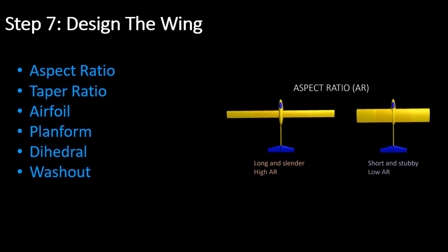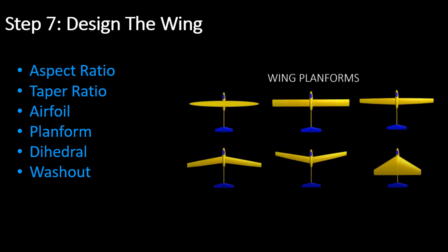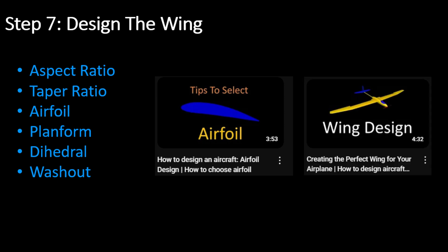Step 7: Design the wing. Select the aspect ratio, taper ratio, airfoils, wing planform, dihedral, washout, and more. My videos on airfoil selection and wing design can help during this step.